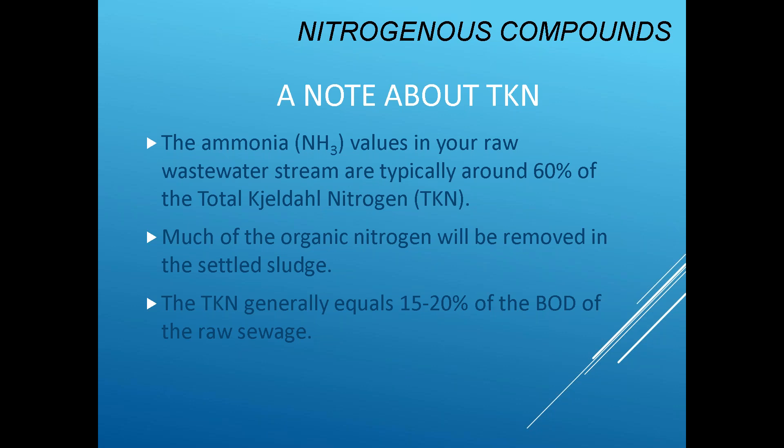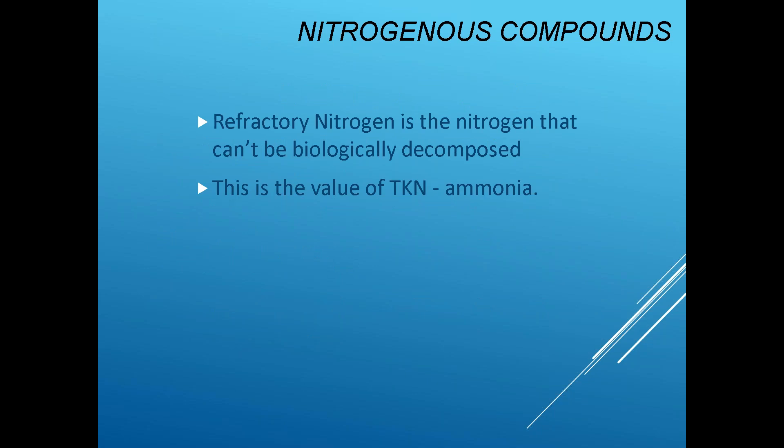If you only sample for ammonia in your raw waste, that's about 60% of the total Kjeldahl nitrogen. Much of the organic nitrogen will be removed in the settled sludge, and TKN is about 15 to 20% of the BOD of raw sewage. When designing for nitrogen removal, TKN should be your starting point. There is also some portion of TKN — refractory nitrogen — that cannot be biologically decomposed. It's a very old form of nitrogen that would take a huge effort to break, which is why some states use ammonia plus nitrate and nitrite rather than TKN.